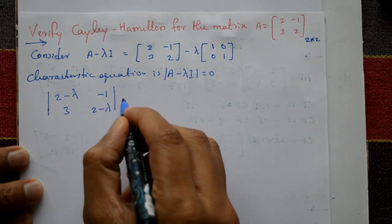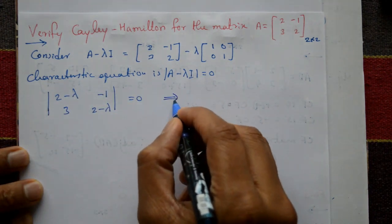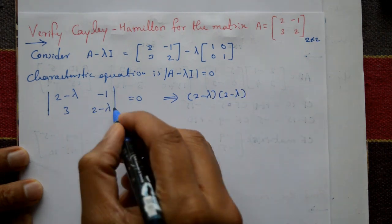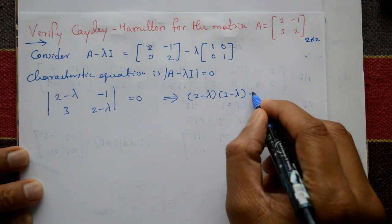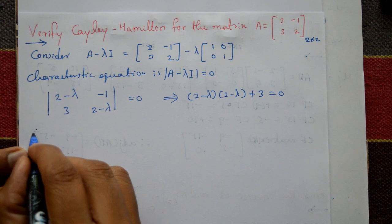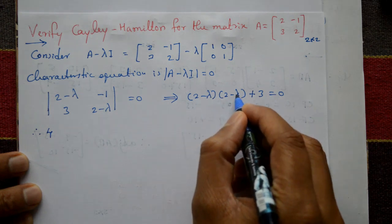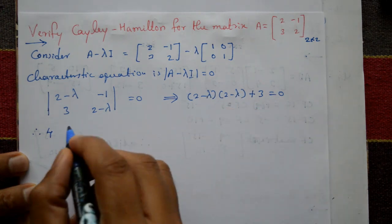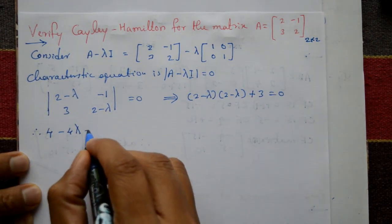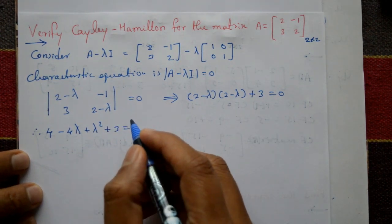Now expand this determinant: (2 minus lambda) times (2 minus lambda) minus (3 times minus 1). The minus times minus gives a plus, so that equals 0. Opening the bracket: 2×2 is 4, 2×(−lambda) is −2lambda, (−lambda)×2 is −2lambda, (−lambda)×(−lambda) is +lambda squared, and plus 3 equals 0.